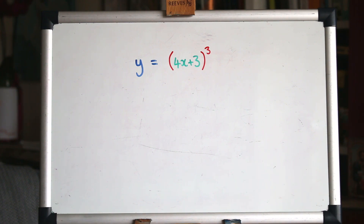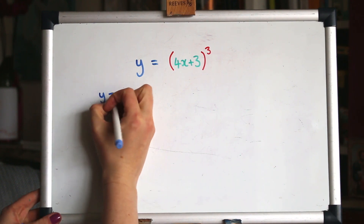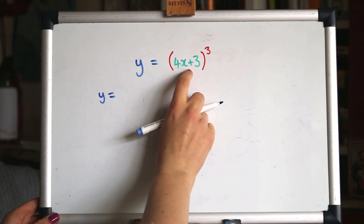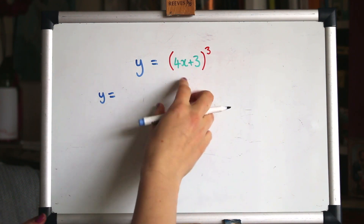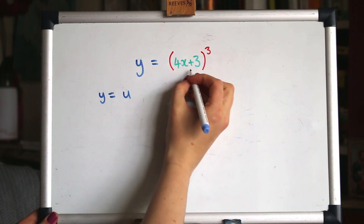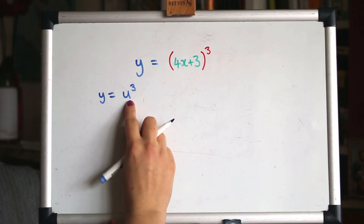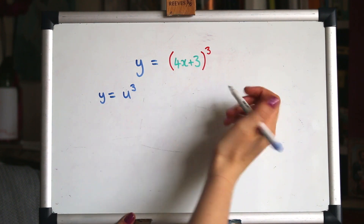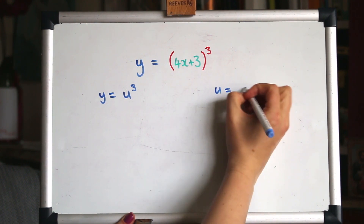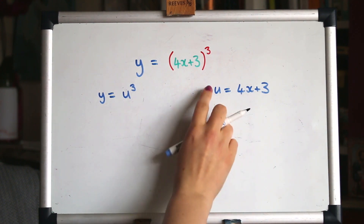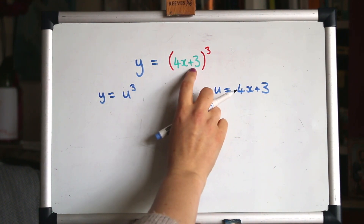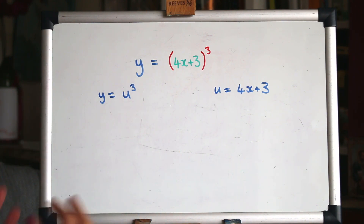I'm going to show you first how to set that up formally, the long way round. The full formal way of using the chain rule is to write the expression again but to use a letter instead of the inner function — we typically use the letter u. So we're cubing u, setting up u as being 4x plus 3. That's the substitution we're using, labelling the inner function.